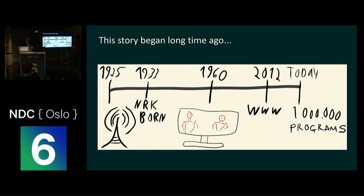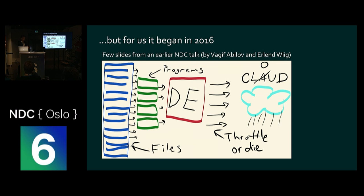NRK's story started almost a century ago — first radio, then TV. Today it's about a million programs that have made their way to the cloud, to different CDN providers. We are working with what we call the distribution engine: a service or set of services that distributes media files — TV programs, radio programs. They consist of multiple files for different rendering qualities, all distributed to the cloud, supporting throttling and other things.